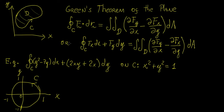This is another really powerful theorem, and we're going to see how it works through an example. We're given this integral here, and the idea is to evaluate it on the curve C, which is defined as a unit circle traversed anti-clockwise. Instead of evaluating directly by finding position vectors, we're going to evaluate it using Green's theorem.